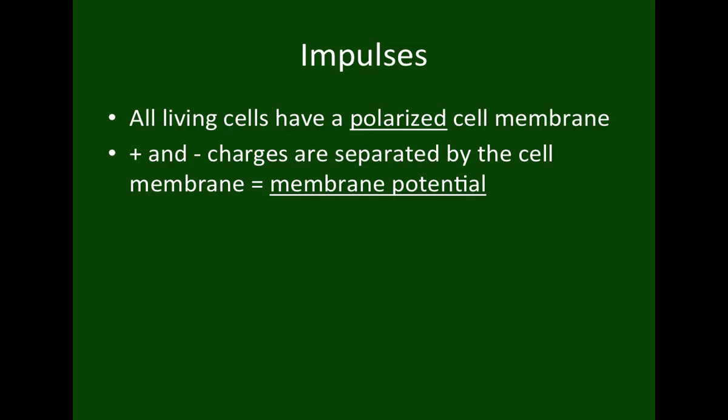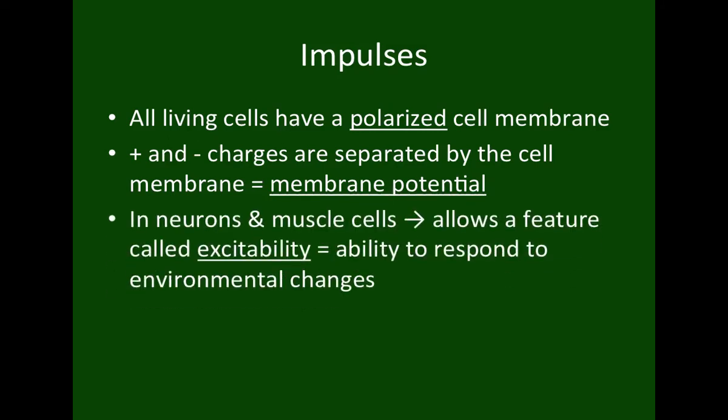This membrane potential exists in every single cell in our body, but only two systems can actually take advantage of it: our neurons and our muscle cells. This allows a feature of both called excitability — the ability of these cells to respond to environmental changes. In neurons, this is what creates an impulse or action potential. In muscle cells, this is what allows them to contract.